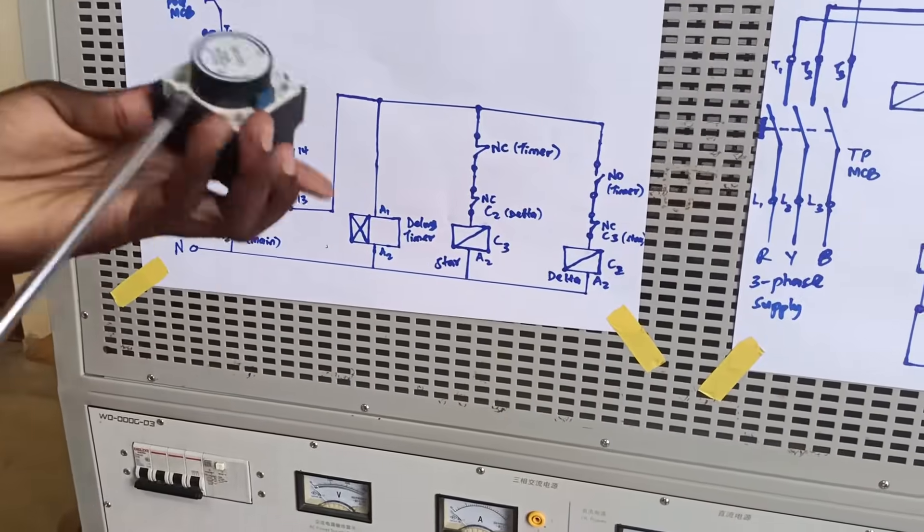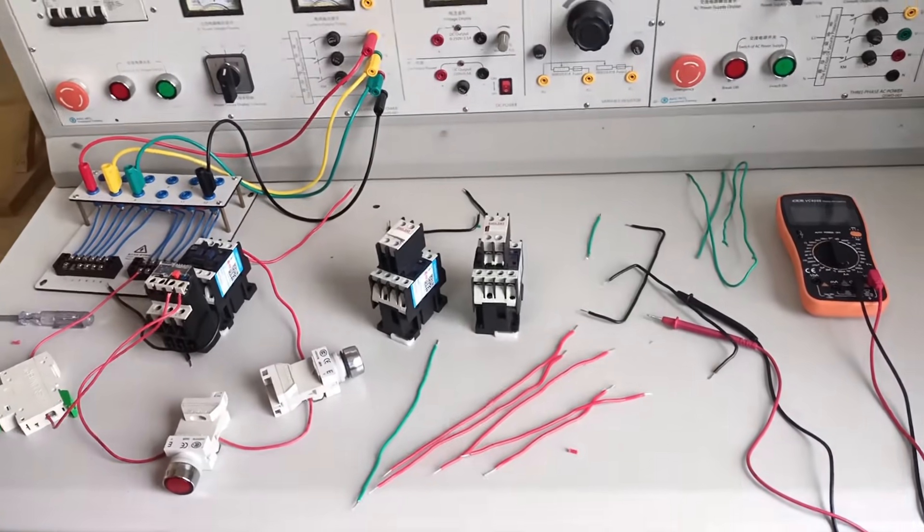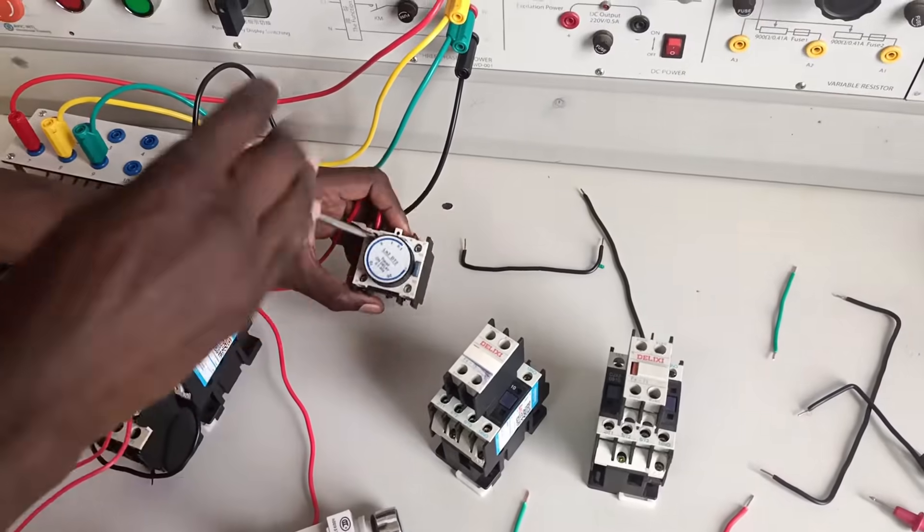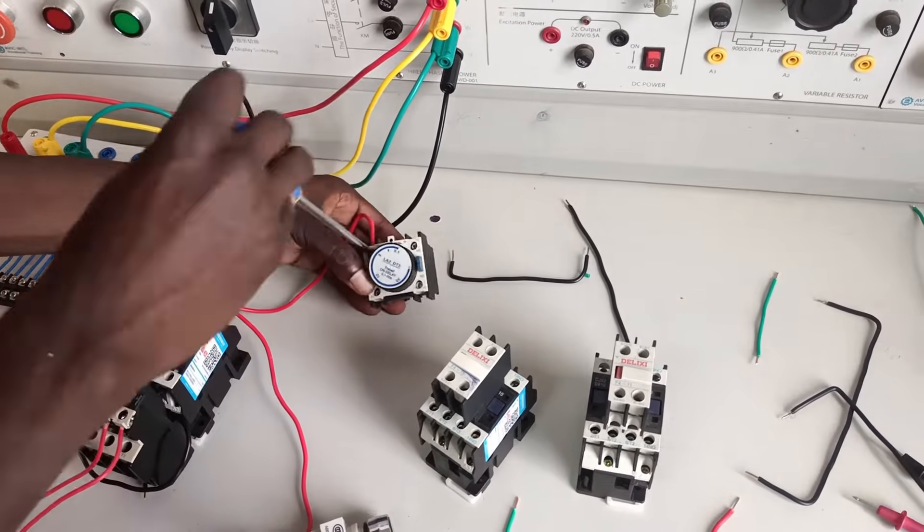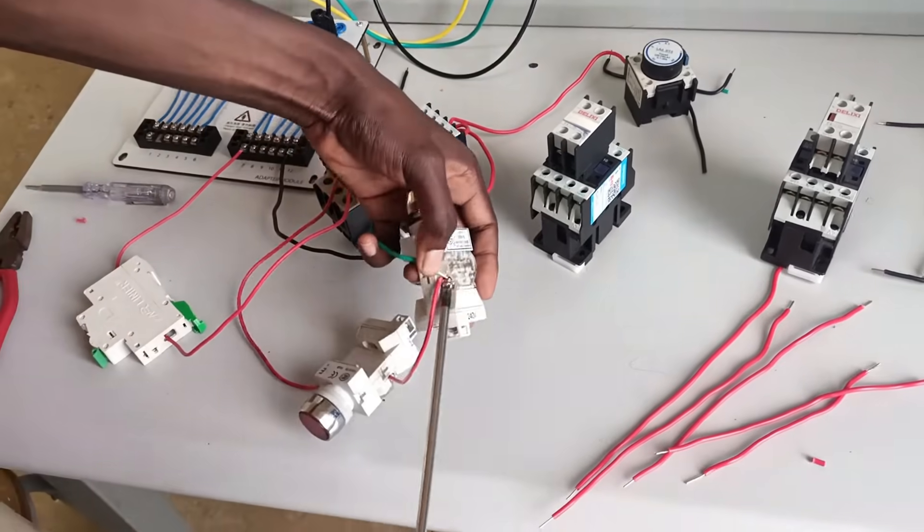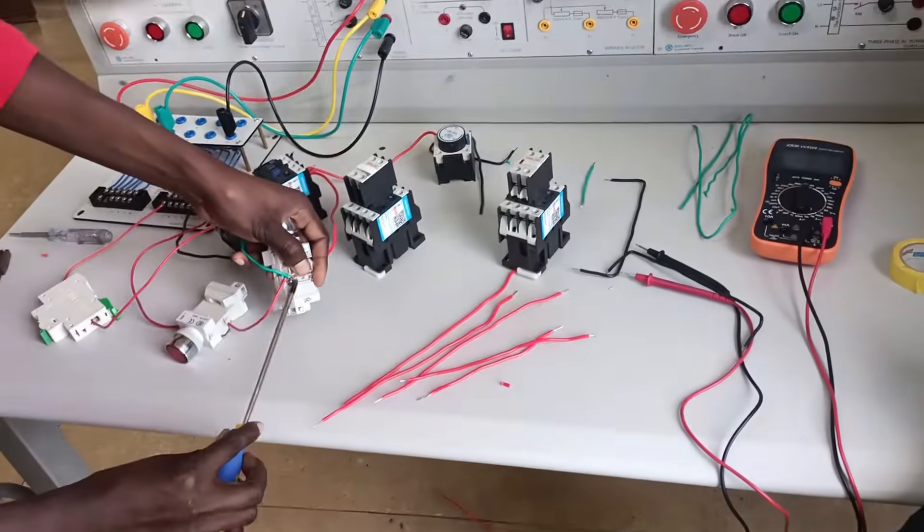Remember we have three cables emanating from A1 of the main contactor, so the timer will take one cable and that cable will go to pin 55. I'm using a manual mechanical delay timer. Let's first connect the holding cable from pin 14 back to pin 3 of the start button. Then let's do the test.